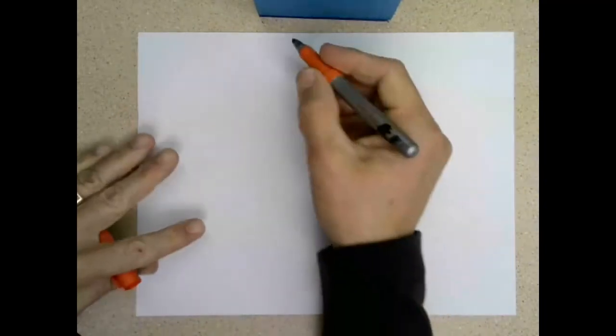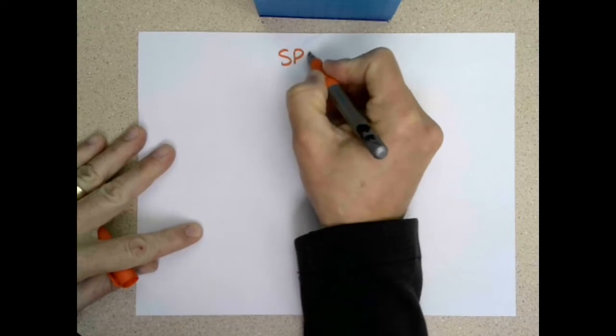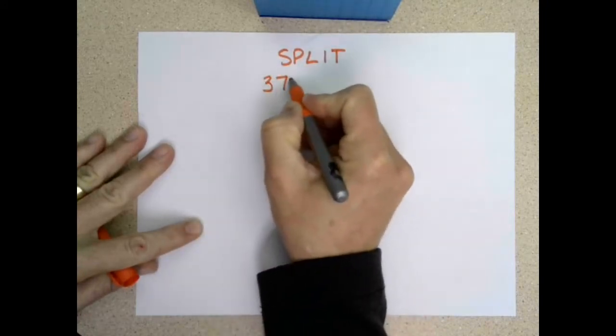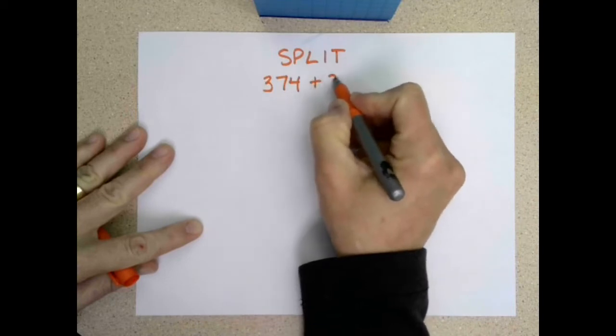All right, so today what we're going to do is we're going to use the split strategy with larger numbers. So we're going to look at 374 plus 289.